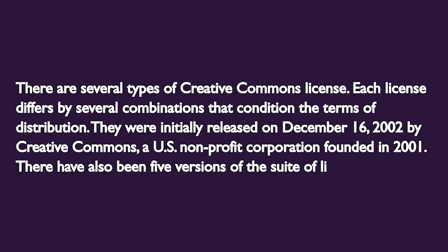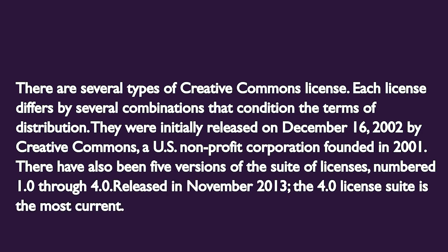There are several types of Creative Commons license. Each license differs from several combinations that condition the terms of distribution. They were initially released on December 16, 2002, by Creative Commons, a U.S. nonprofit corporation founded in 2001. There have also been five versions of the suite of licenses, numbered 1.0 through 4.0, released in November 2013. The 4.0 license suite is the most current.